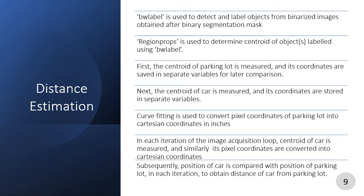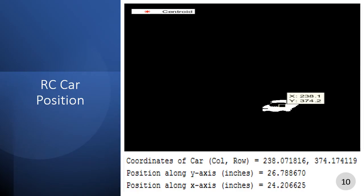The distances of the car and parking lot from the x and y axes were then simply subtracted to obtain the distance of the car from the parking lot in inches. Moreover, curve fitting also allows us to mitigate perspective view error, and it returned accurate results with an error of less than 0.5 inch in each iteration. This is an example of position determination where the coordinates of the car are its pixel coordinates, and the positions along the x and y axes in inches are its Cartesian coordinates obtained from the curve fitting models.